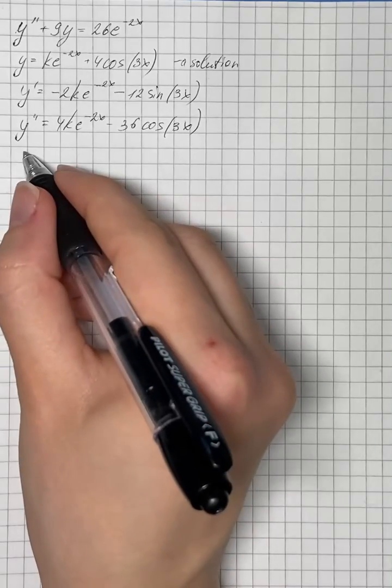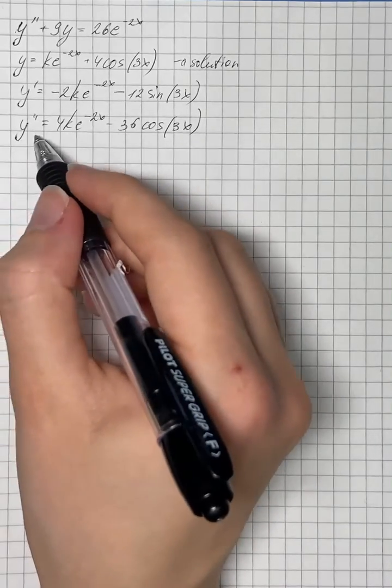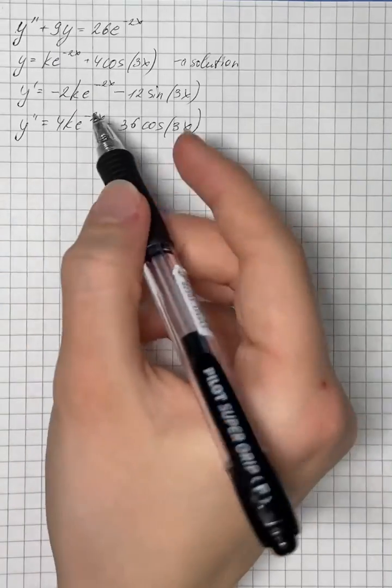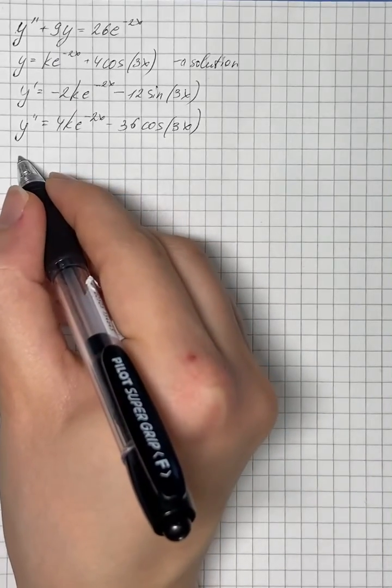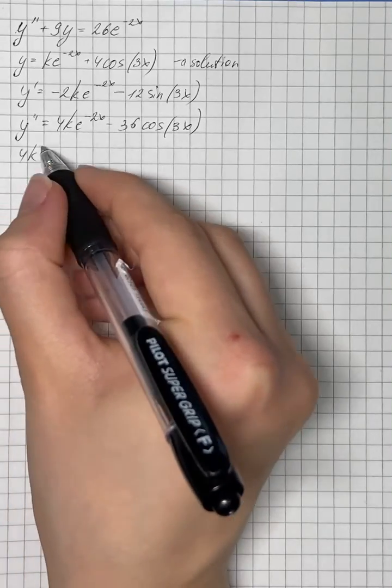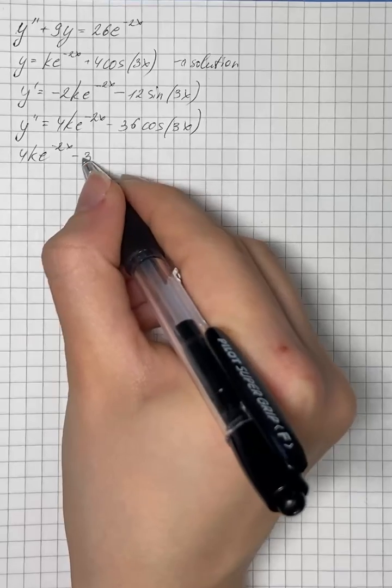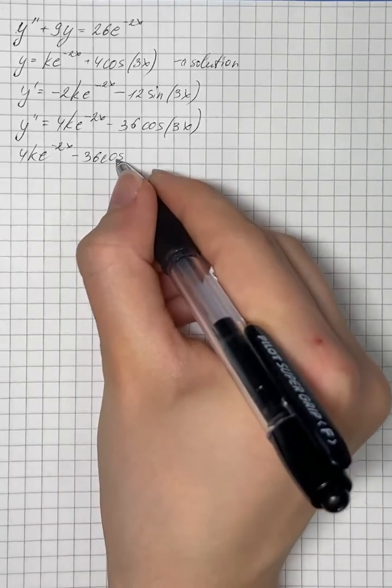And now we're going to substitute it in our differential equation. So it's going to be 4k e to the power of negative 2x minus 36 cosine of 3x.